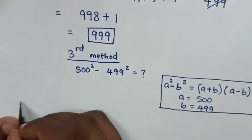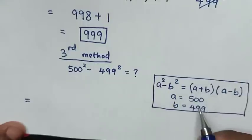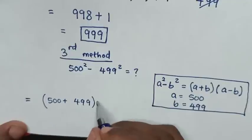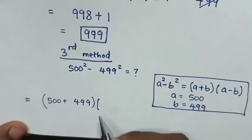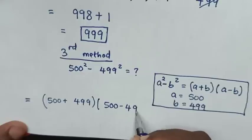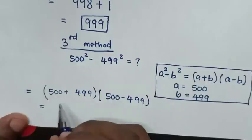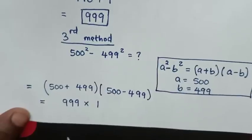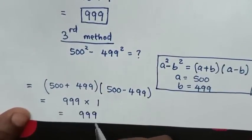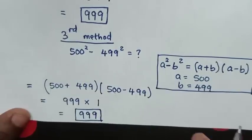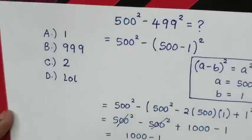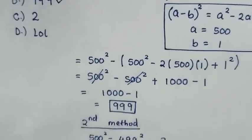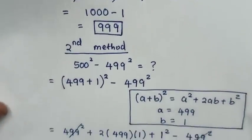Then in the next step, our expression would be equal to — from here A plus B, so it will be 500 plus 499, bracket, then times A minus B is 500 minus 499. Then this will be equal to 999 times 1, so this will be equal to 999. So this is our final answer. To select in the multiple choice, it is B. Thank you. Don't forget to subscribe to my channel and see you in the next video. Bye bye.